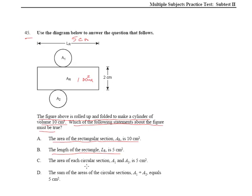The area of each of the circular sections, A1 and A2, is 5 centimeters. In other words, is this 5 centimeters squared? And this one, 5 centimeters squared? The sum of the areas of the circular sections, A1 plus A2, equals 5 centimeters squared.